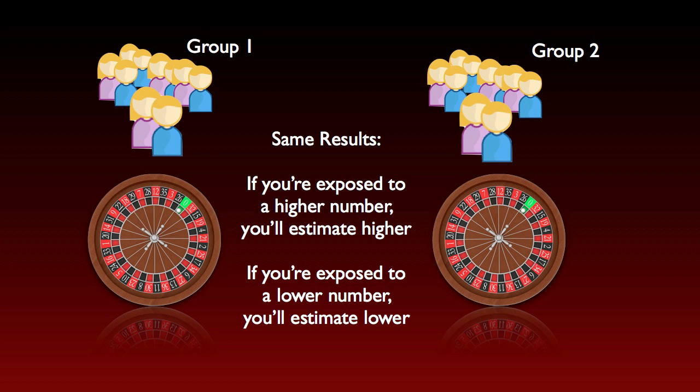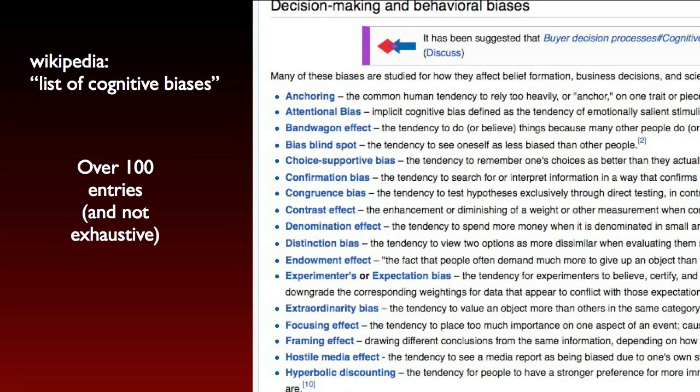This would be interesting but not deeply significant if the anchoring effect were the only cognitive bias we've discovered. But if you go to Wikipedia and type in 'list of cognitive biases,' you'll find a page listing just over 100 biases — and the list is not exhaustive. As critical thinkers, we all need to acquire a certain level of cognitive bias literacy. We don't need to become experts, but we should all be able to recognize the most important ones: confirmation bias, the base rate fallacy, the gambler's fallacy, and so on. These are just as important as understanding standard logical fallacies.